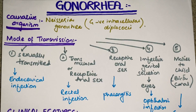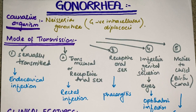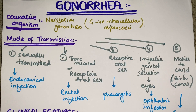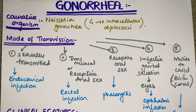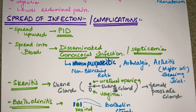Now talking about the clinical features — how the patient will present to us. First, a very important sign is excessive purulent discharge from the vagina. Second, the patient will have lower abdominal pain, and third, dysuria, meaning painful urination. On speculum examination, we will see cervicitis — inflammation of the cervix — with or without mucopurulent discharge within it.